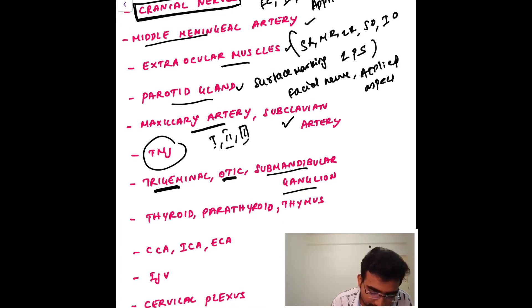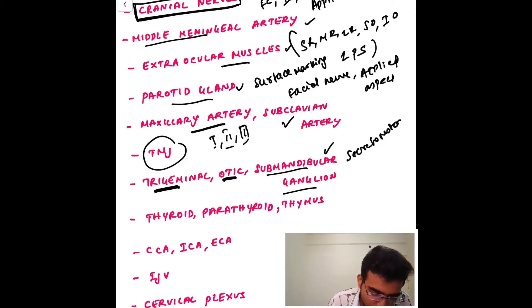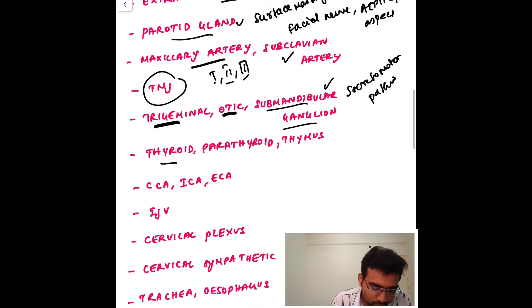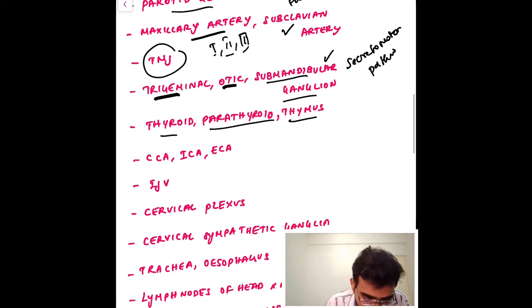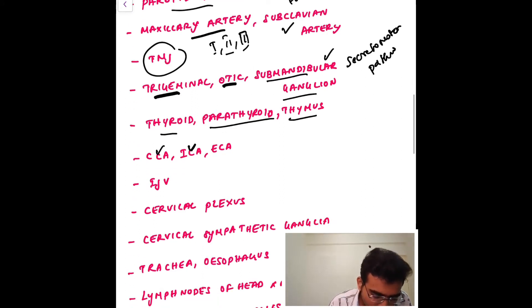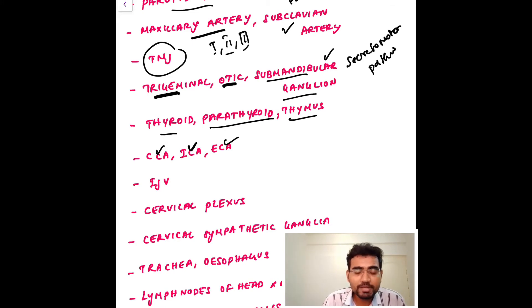For the ganglia — trigeminal ganglion, otic ganglion, and submandibular ganglion — you should know the nerves passing through each ganglion and the secretomotor pathways. For the thyroid, parathyroid, and thymus glands, learn the development of each gland and the applied aspects. For the common carotid, internal carotid, and external carotid arteries, learn all their branches.